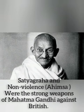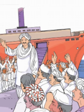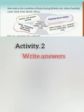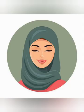He never gave up non-violence. Now you have a clear picture of India during British rule when Gandhiji came back from South Africa. The second activity you want to do is write answers: When did India become independent? What were the conditions of India during British rule? Today's class is over. Do the activities today itself.